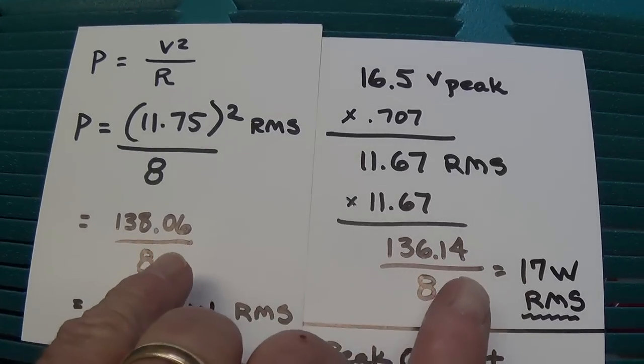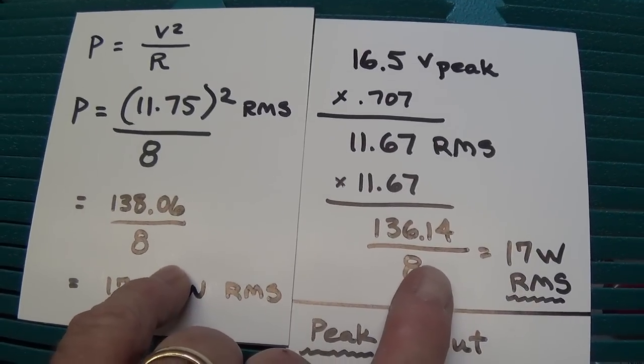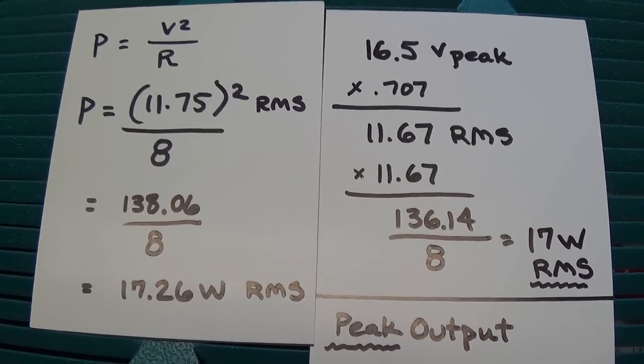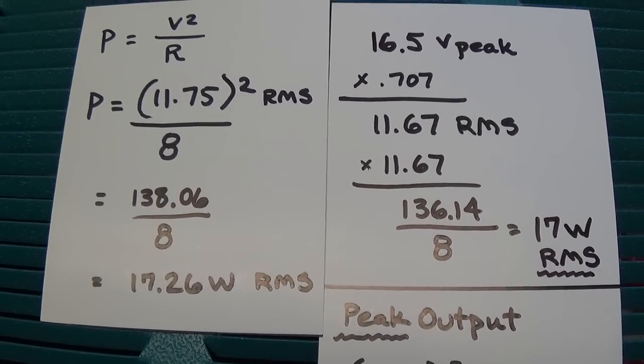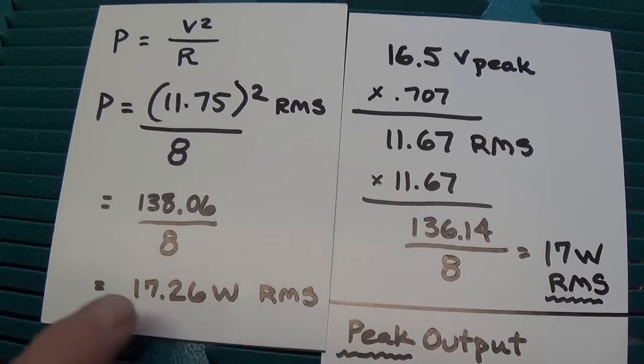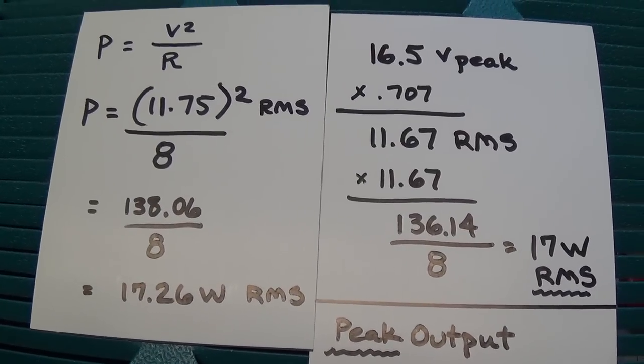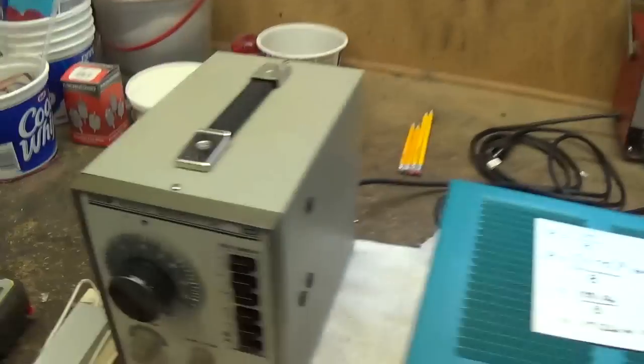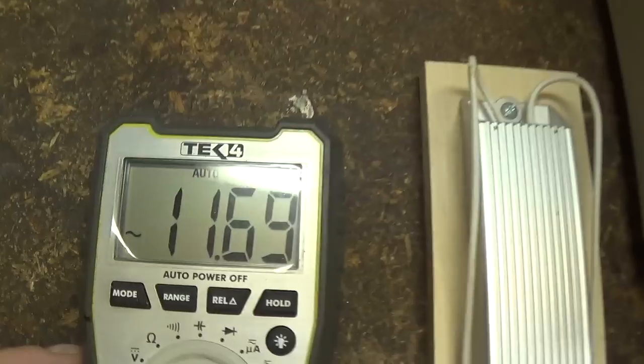And it should be also noted that these computations are only correct at 1,000 cycles per second. At 2,000 or 3,000 cycles per second, the output may differ. Just for fun, let's see what the output is at 2,000 cycles per second. Well, it's a wee bit lower.